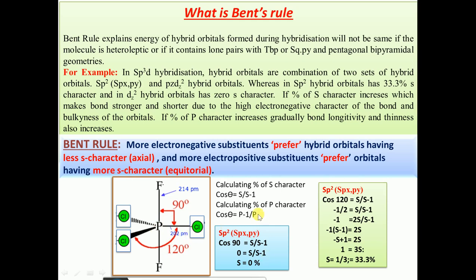Conversely, as the percentage of p-character increases, bond length and bond thinness increase. In the pz·dz² hybrid orbitals, the percentage of p-character is greater — equal to 50% — so the bond is longer. That is why the P–Cl bond is shorter and the P–F axial bond is slightly longer. From all these observations, Bent proposed his rule.